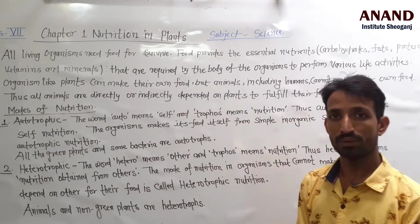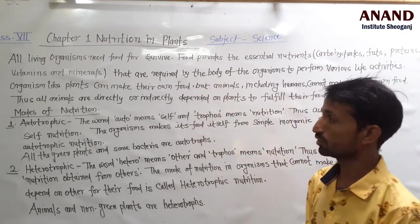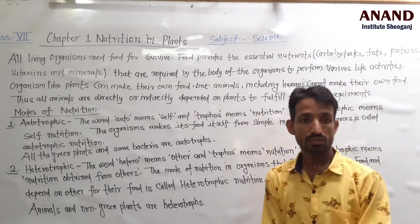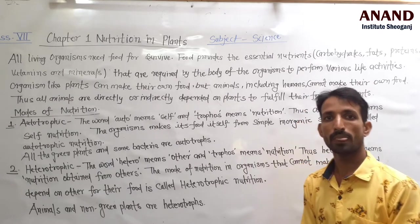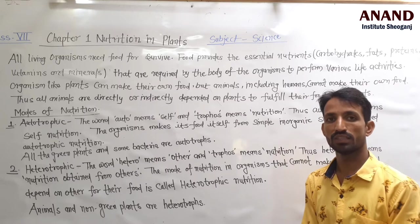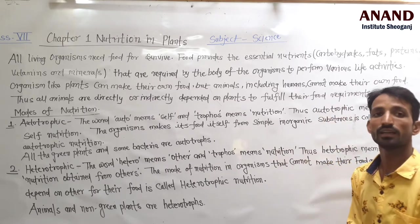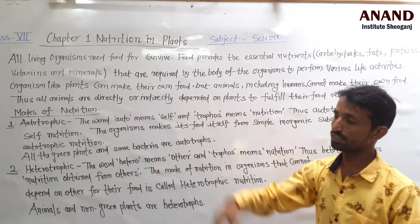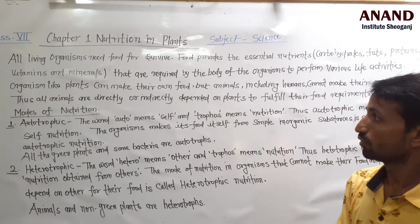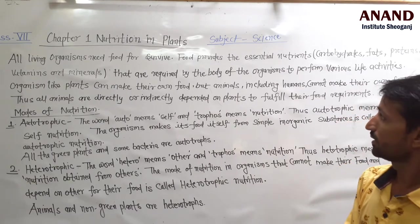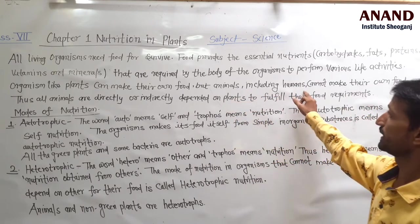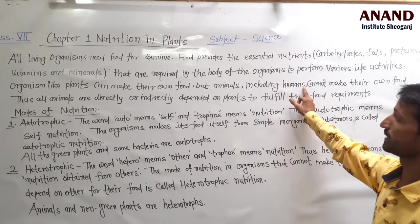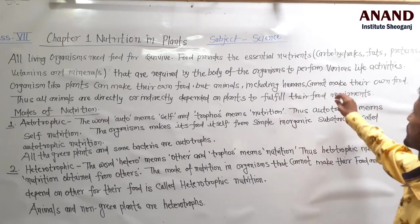Vitamins and minerals are obtained from food and are required by the body. They are necessary for organisms to perform various life activities. Organisms like plants can make their own food, but animals and other such organisms, including humans, cannot make their own food.